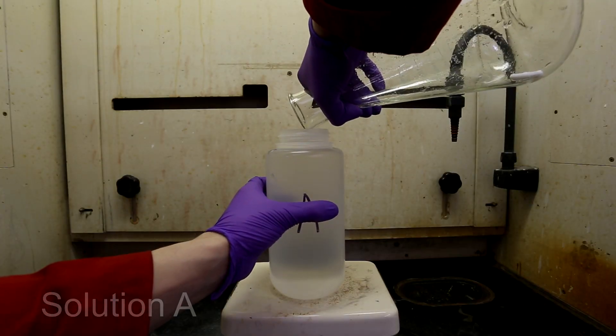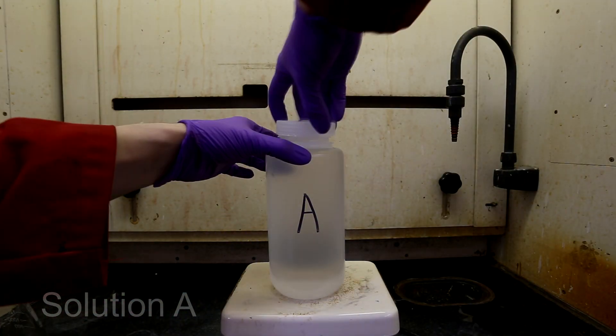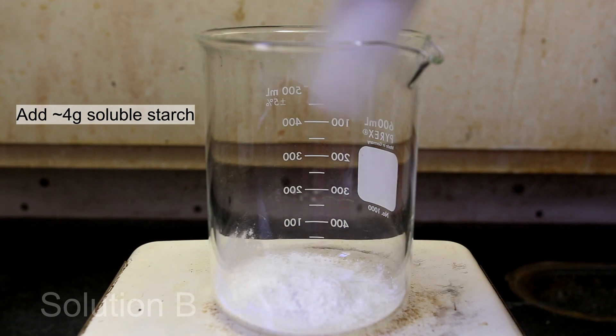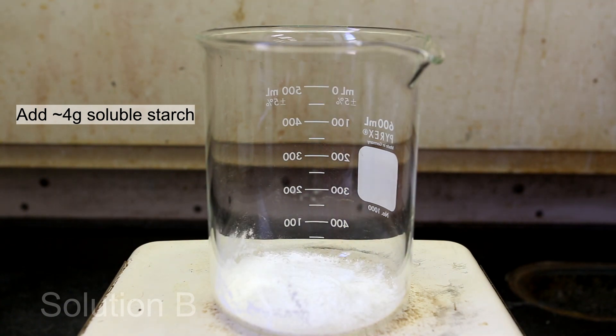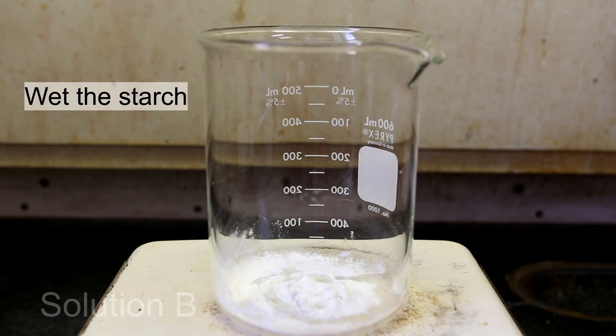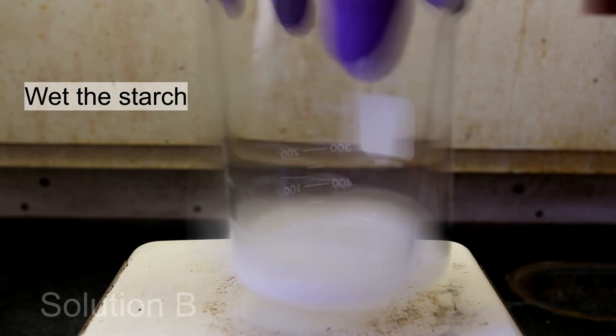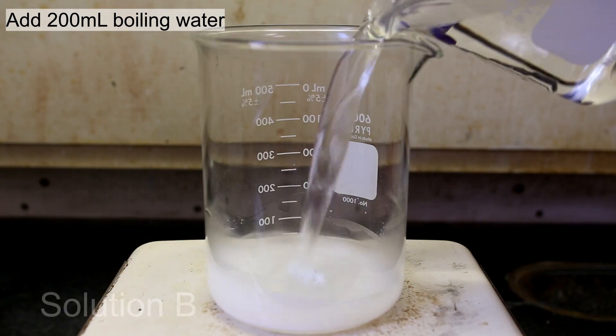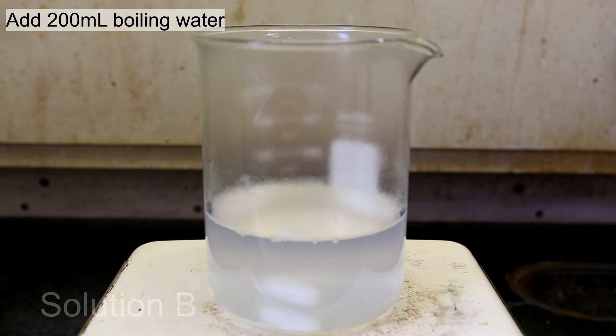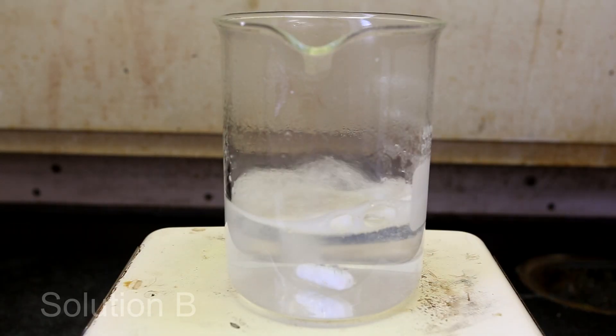We will put solution A aside for now and move on to making solution B. First, add 4 grams of soluble starch to a beaker. Next, add a small amount of water to the beaker and swirl the water around to wet all of the starch. Next, add about 200 milliliters of boiling hot water. After boiling the starch solution for a few minutes, it should start to clear up.